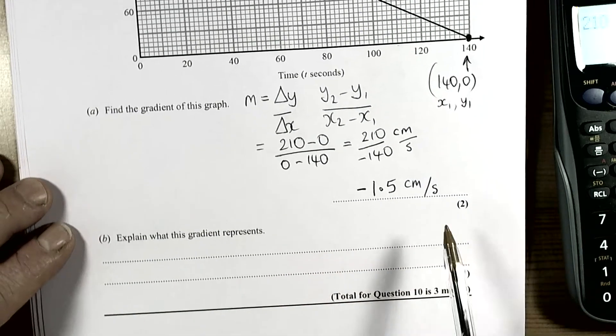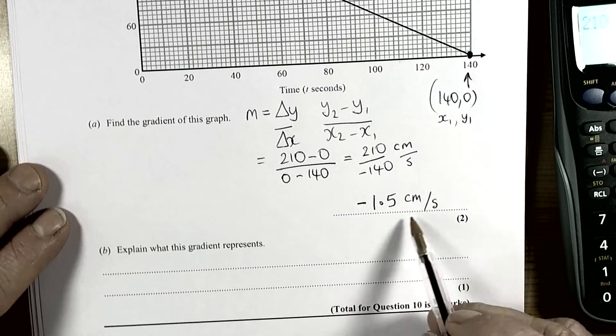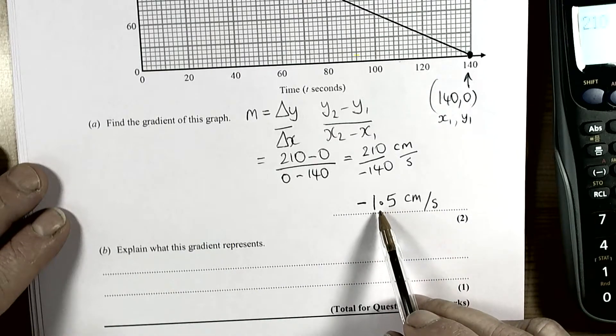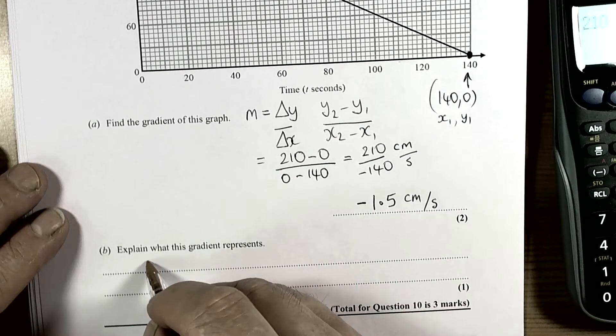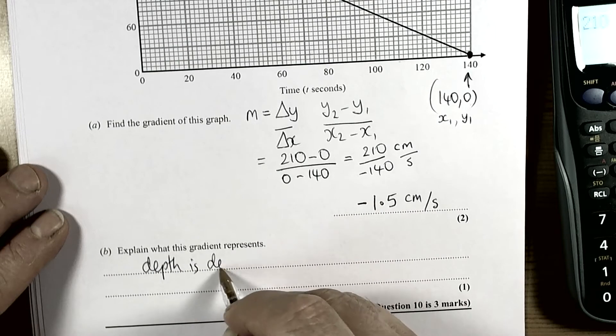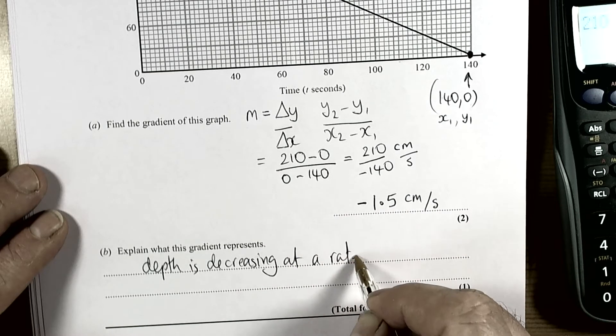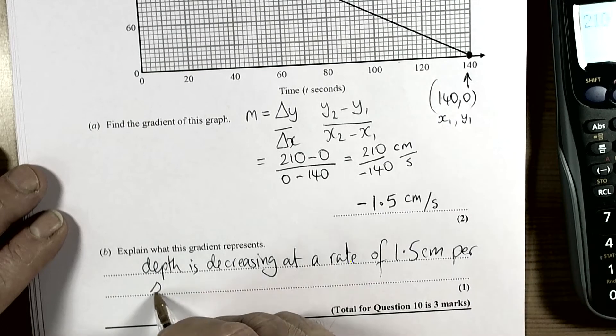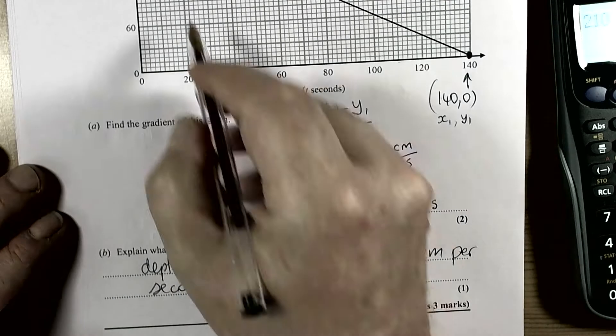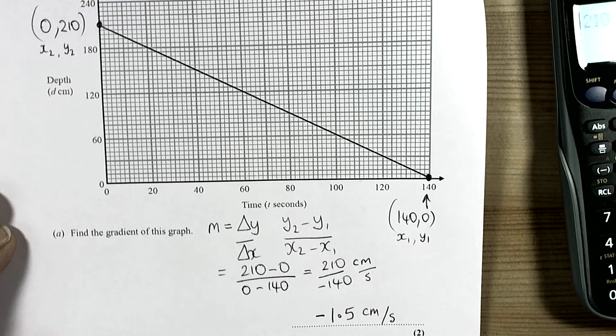The question then says explain what the gradient represents. Well it's negative 1.5 centimetres per second. So it's telling us that the depth is decreasing at a rate of 1.5 centimetres per second. It's a straight line so it's a constant change. And the gradient of the line is always about the rate of change of that line.